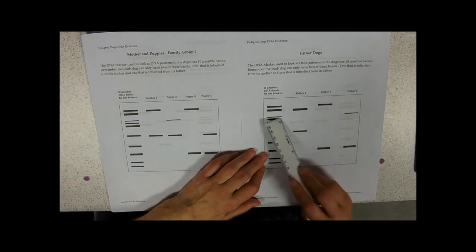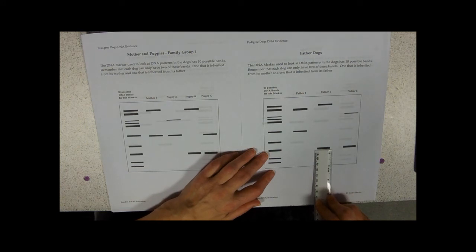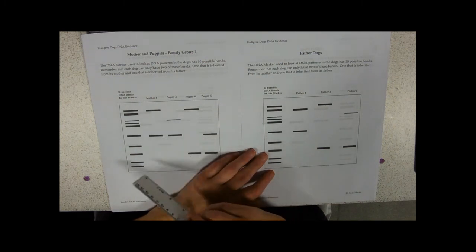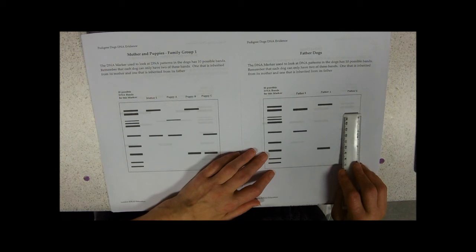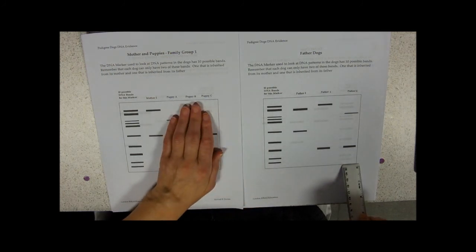So not father one, he's not got that third marker from the top or the third marker from the bottom. And he needs to have both because he needs to have passed on that one to puppy A. Father six has the third one from the top and the third one from the bottom, so this dog is the father of these three puppies.